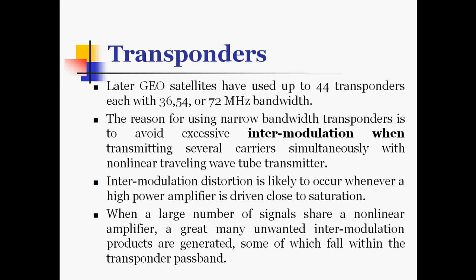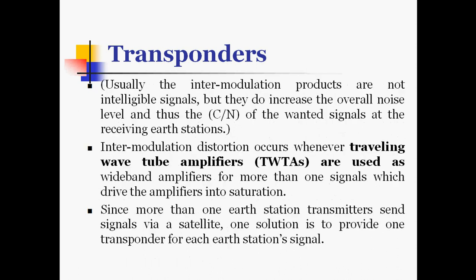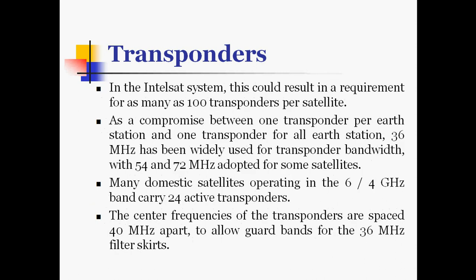Intermodulation distortion is likely to occur whenever a high power amplifier is driven close to saturation. When a large number of signals share a non-linear amplifier, many unwanted intermodulation products are generated, some of which fall within the transponder passband. These products increase the overall noise level and reduce the carrier-to-noise ratio at the receiving earth station. Since more than one earth station transmitter sends signals via a satellite, one solution is to provide one transponder for each earth station signal, which in the IntelSAT system could require as many as 100 transponders per satellite.